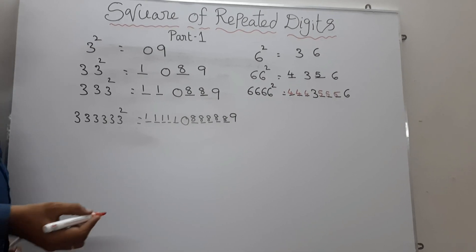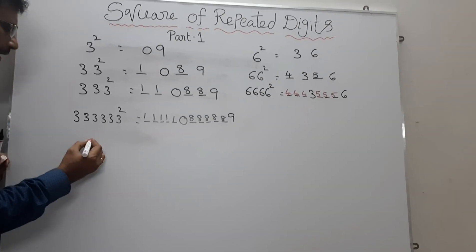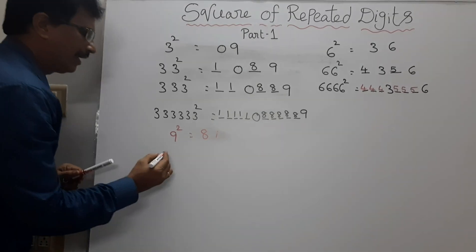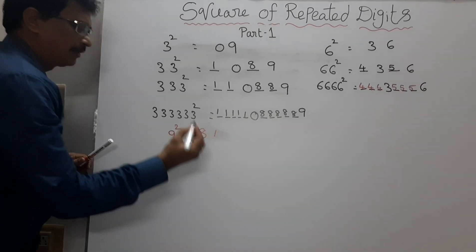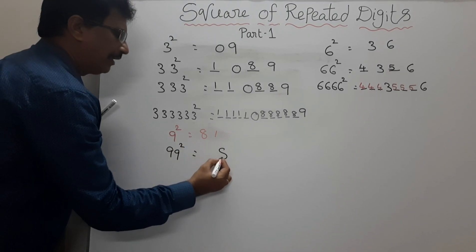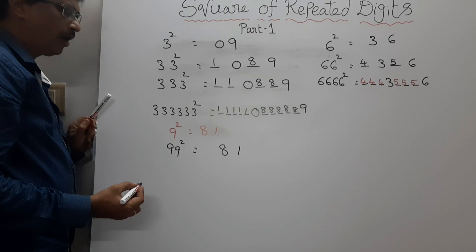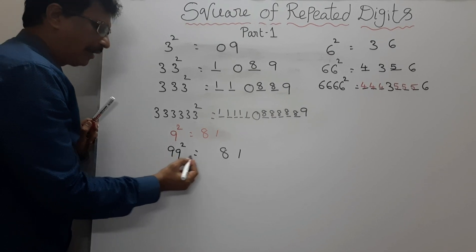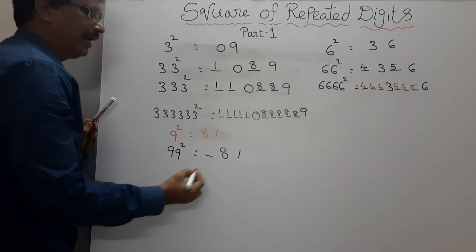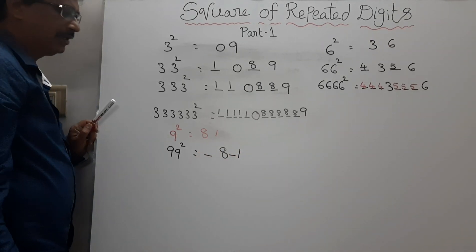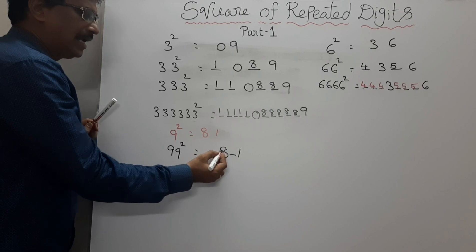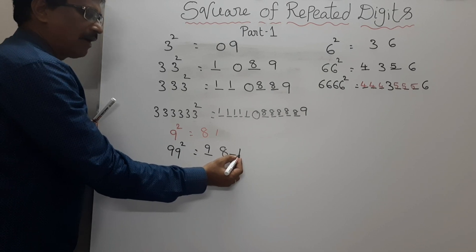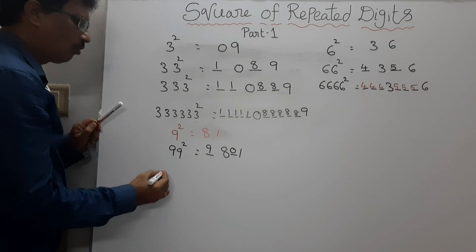Now we will discuss the squares of repeated digits of 9. We know that 9 squared equals to 81. Suppose we want to find 99 squared. Here we write 9 squared as 81. This is a 2-digit number, so we have to insert 1 less than the number of digits — that is 1 blank before 8 and 1 blank after 8. We have to add 1 for 8: 8 plus 1 is 9. We have to subtract 1 from 1: 1 minus 1 is 0. So 99 squared equals to 9,801.